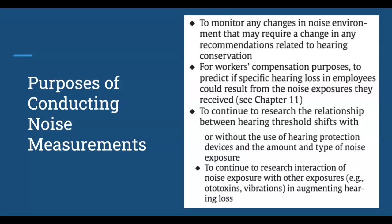Here's a clinical note: anytime you are testing somebody and there's any question about workers' comp, or they're in noise and you're doing a baseline or annual audiogram for hearing conservation, you should always test 3000 and 6000 Hz. The reason is that 6000 Hz is often used in the calculation for disability due to hearing loss, so I always tell my clinicians and audiologists to test 3000 and 6000 Hz for anybody who's in noise, just in case you have to calculate it later.